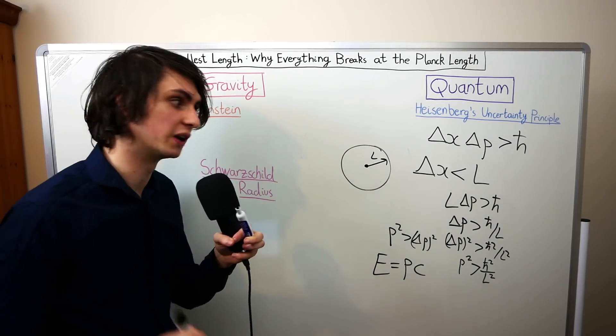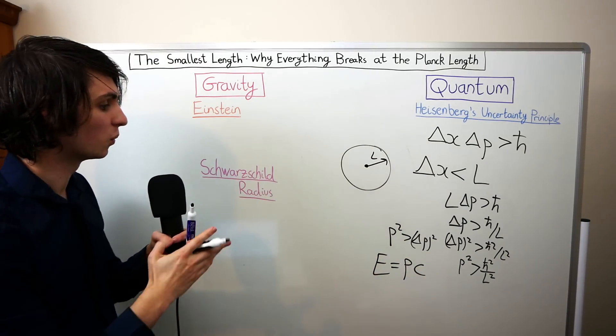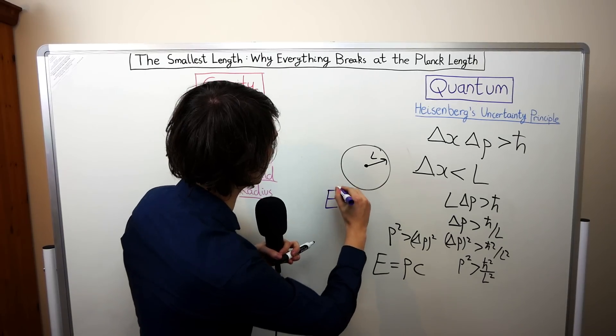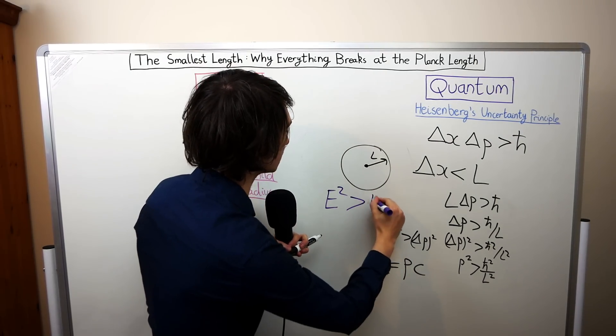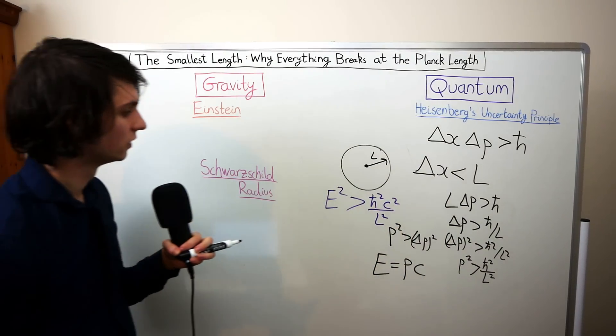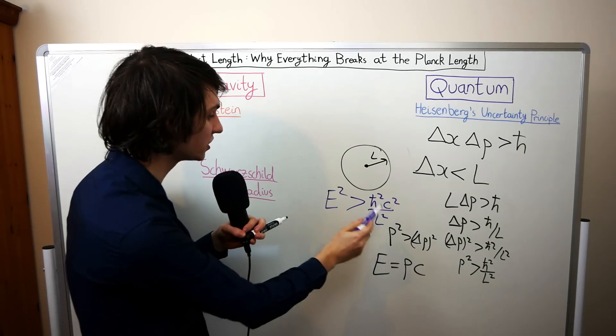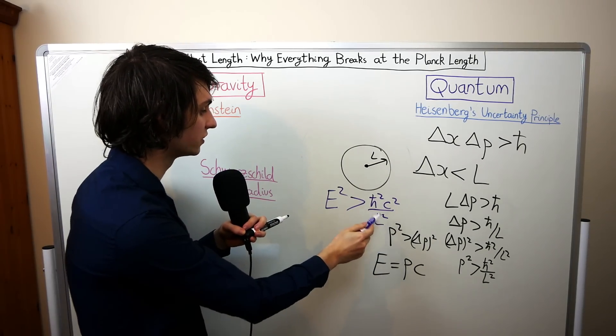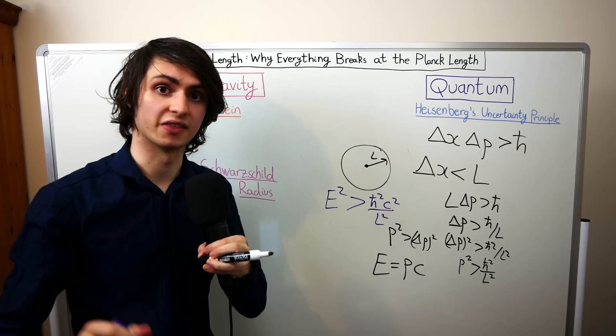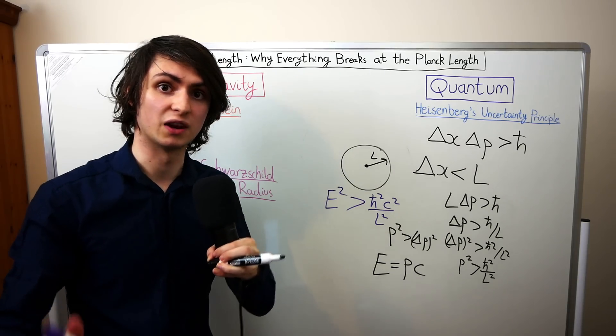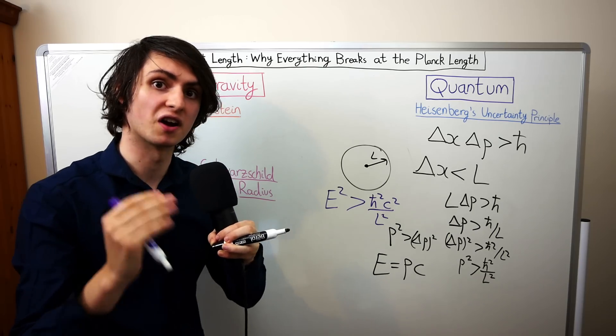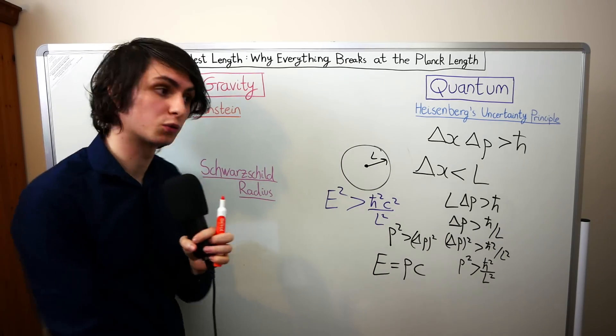So substituting this formula into what we've derived from the uncertainty principle we end up with the relationship that E squared, the energy of the particle squared, has got to be larger than h bar squared c squared over L squared. What this tells us now is that to probe very small length scales requires very high energies. Incidentally this is exactly how particle accelerators like the Large Hadron Collider work. In order to probe very small length scales they have to smash particles together at very high energies. This is all we need from quantum mechanics.